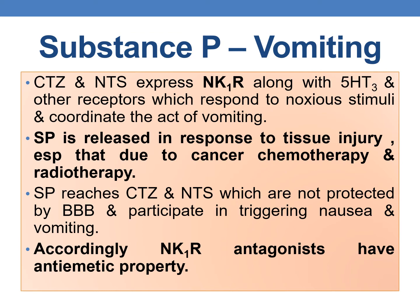The CTZ and NTS areas in the brain express NK1 receptors along with 5-HT3 and other receptors, which respond to nauseous stimuli and coordinate the act of vomiting. Substance P is released in response to tissue injury, especially due to cancer chemotherapy and radiotherapy. It reaches the CTZ and NTS, which are not protected by the blood-brain barrier, and participates in triggering nausea and vomiting. Accordingly, NK1 receptor antagonists have potential anti-emetic properties utilized in cancer chemotherapy.